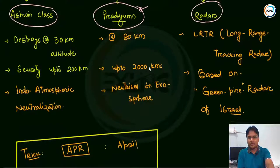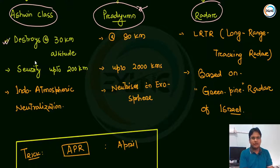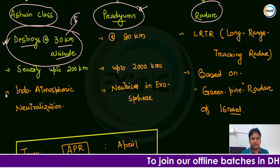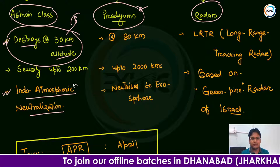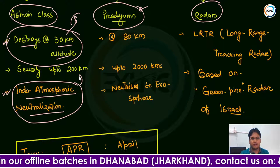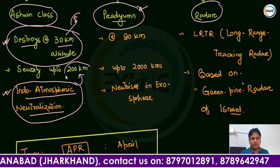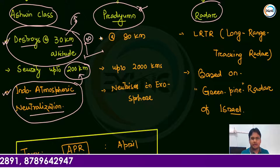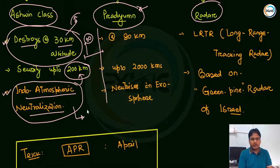Let us read about the Ashwin class: it can destroy ballistic missiles at 30 km altitude. This 30 km range capability is called endo-atmospheric neutralization - a very important term to remember. Endo-atmospheric neutralization is associated with the Ashwin class system. It provides security up to 200 km horizontal range but 30 km in height. One important point: the Ashwin class is based on the principle of the Agni missile system.